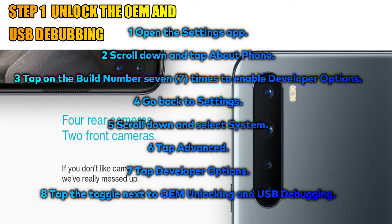Scroll down and tap on About Phone, then tap on the Build Number. Press it 7 times to enable Developer Options. Go back to Settings, scroll down and select System, then tap Advanced, and then tap Developer Options. Enable the toggle next to OEM Unlocking and USB Debugging.